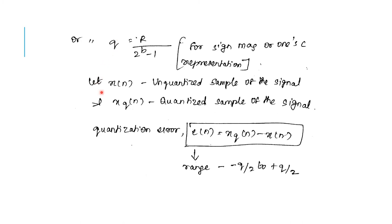Let X(n) be the unquantized sample of the signal and XQ(n) be the quantized sample of the signal. The quantization error E(n) is represented as XQ(n) minus X(n), where the range of error lies between minus Q by 2 to plus Q by 2.